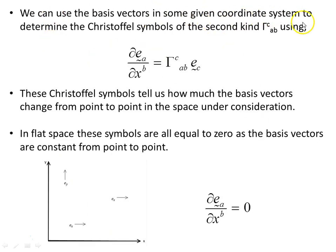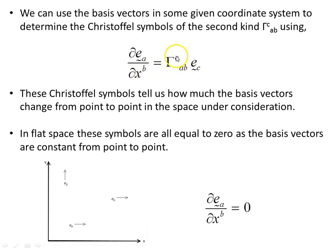We can use the basis vectors in some given coordinate system to determine the Christoffel symbols of the second kind — that's with one index raised, one upper index and two lower indices. This equals the partial derivative of the basis vector with respect to each of the coordinates in turn, which is expressed as a sum over c, where c takes on all coordinate values for that space.